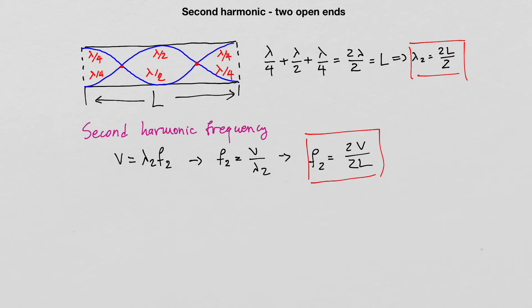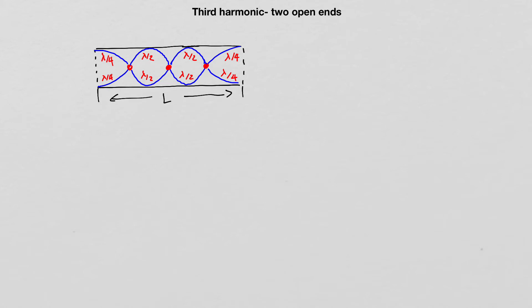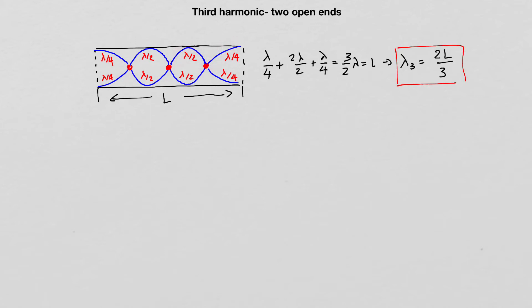Now let's do the third harmonic, and then I'll be able to generalize the expression for any harmonic in a pipe with two open ends. The standing wave for the third harmonic has three nodes and antinodes at the ends. The branches are λ/4, λ/2, λ/2, and λ/4, so the pipe length L equals λ/4 + 2(λ/2) + λ/4 = three halves λ, giving L = (3/2)λ.